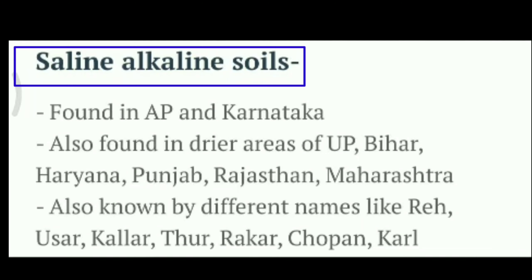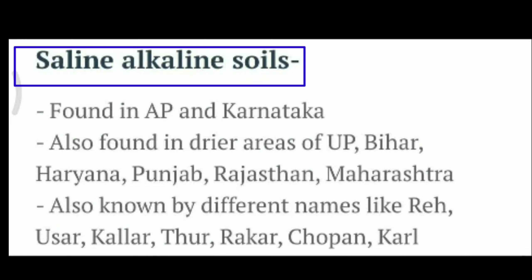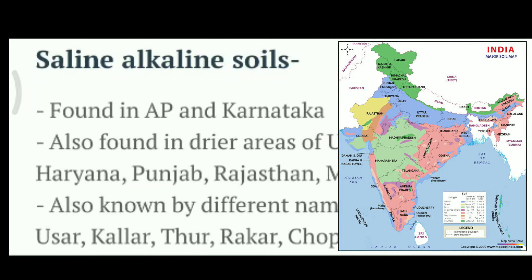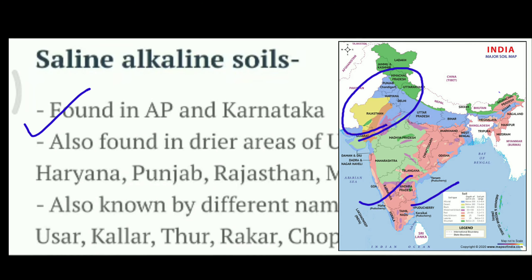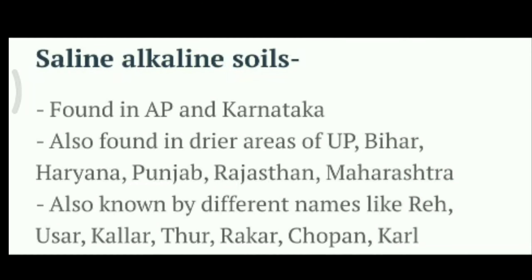If we talk about the areas of saline and alkaline soil, they are found in Uttar Pradesh, Karnataka, Haryana, Punjab, Rajasthan, and Maharashtra.